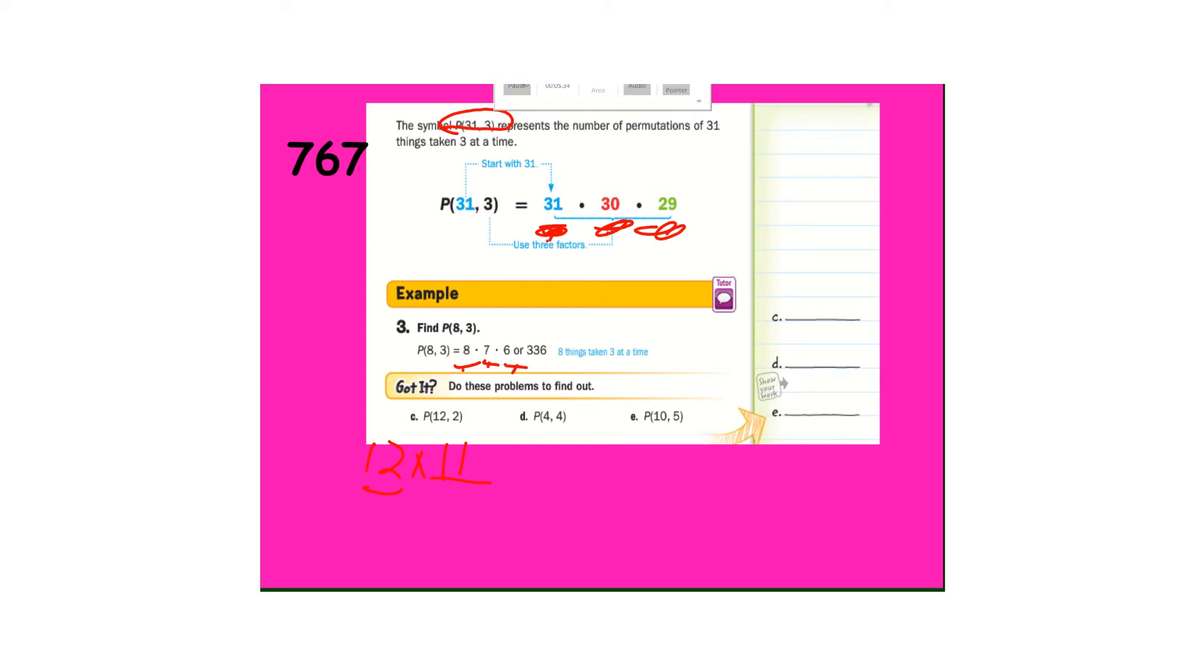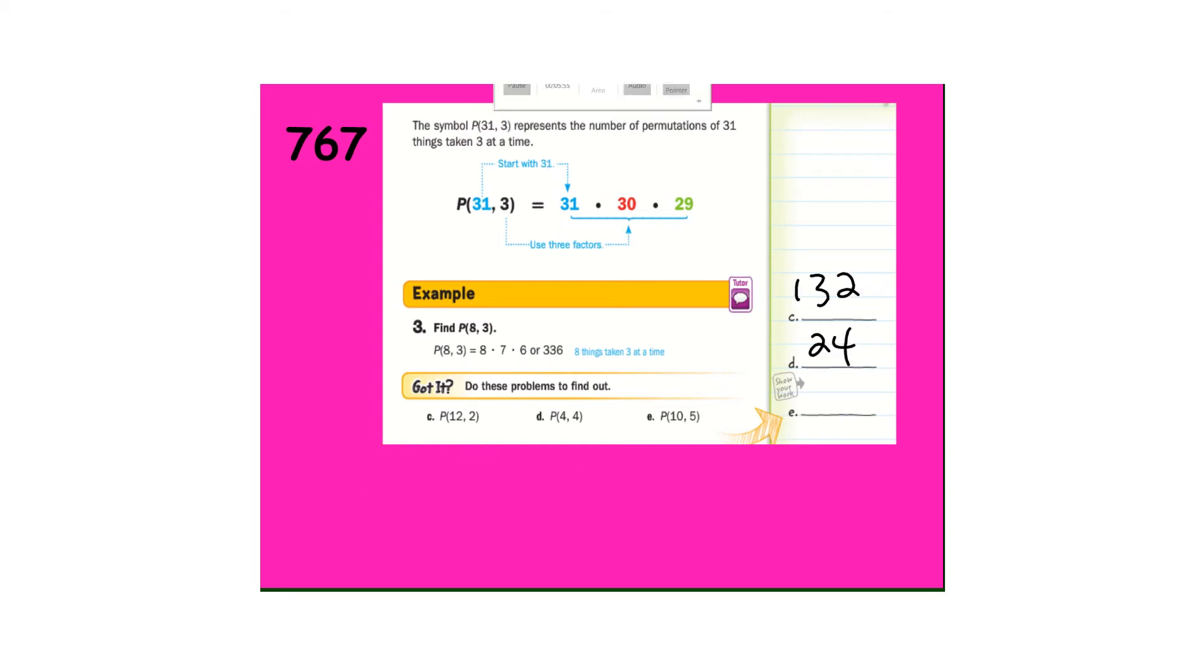Okay. So 12 times 11. 132. We need four spots. So we need four times three times two times one. We have 12 times two. 24.